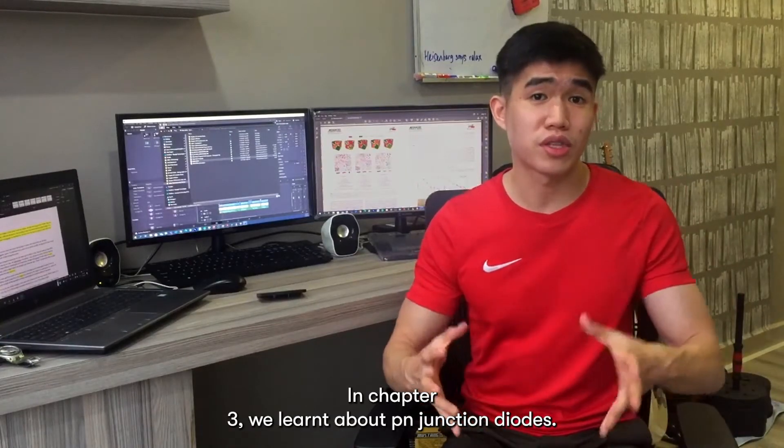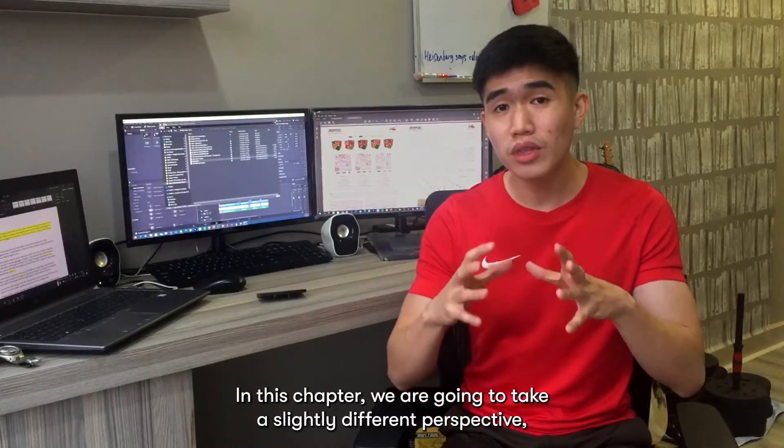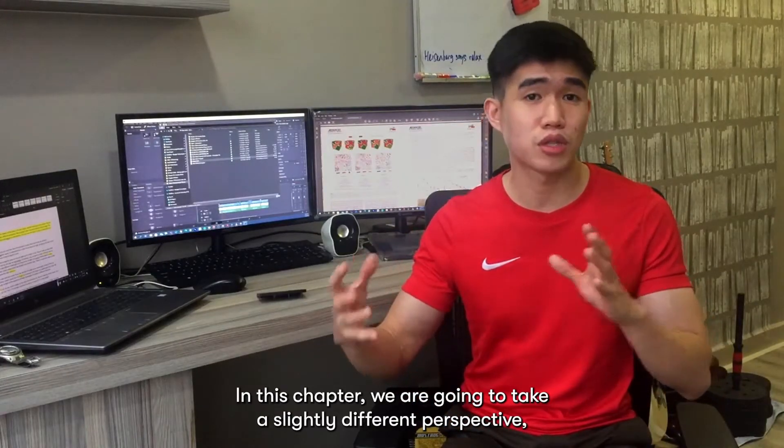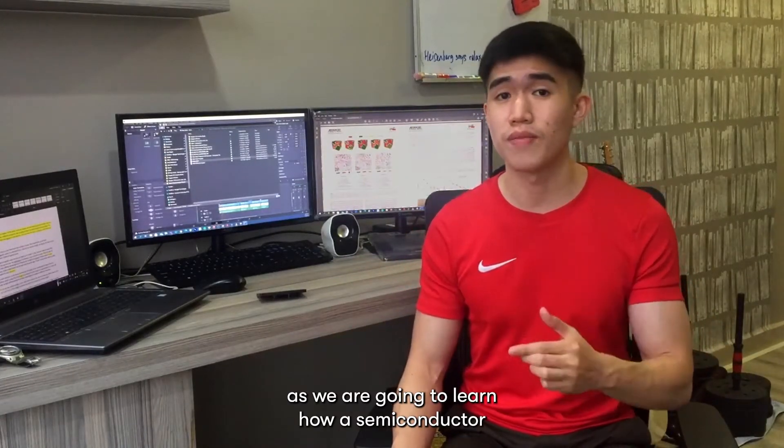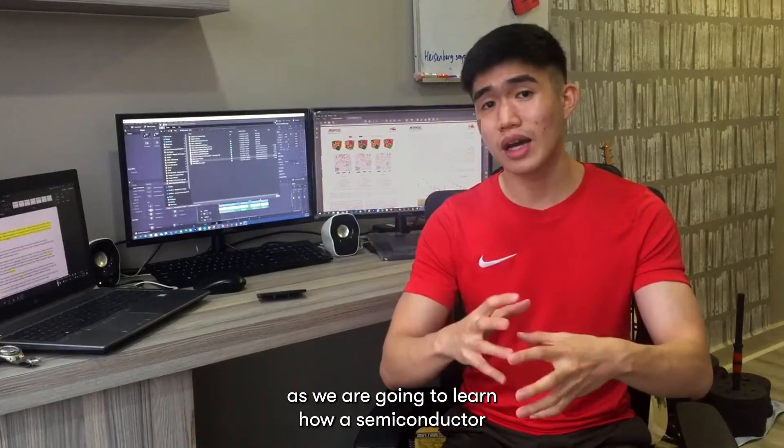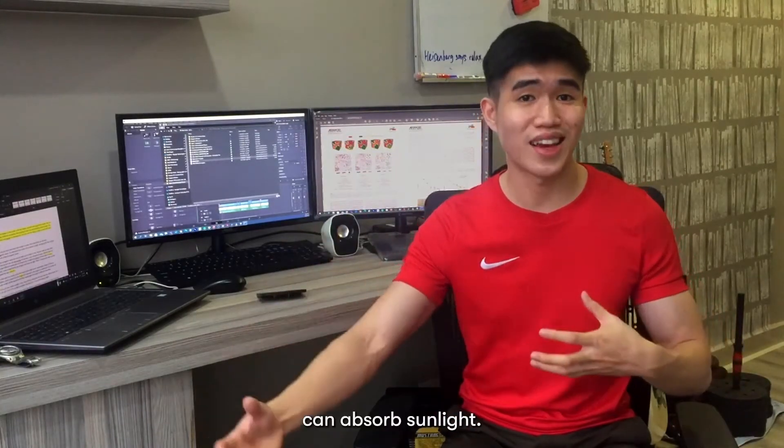In chapter 3, we learned about PN junction diodes. In this chapter, we are going to take a slightly different perspective as we are going to learn how a semiconductor can absorb sunlight.